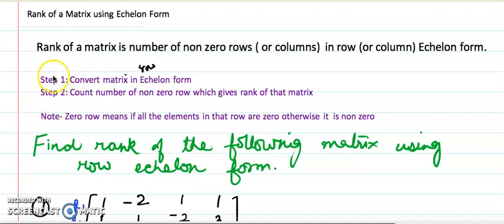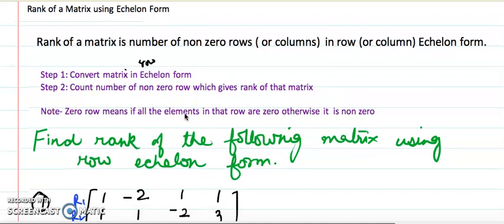Let's see the steps to follow before declaring the rank of any matrix. Step one: convert the given matrix into row echelon form, then count the number of non-zero rows, which gives the rank. We declare any row to be a zero row if all the elements in that row are zero; otherwise it is a non-zero row.